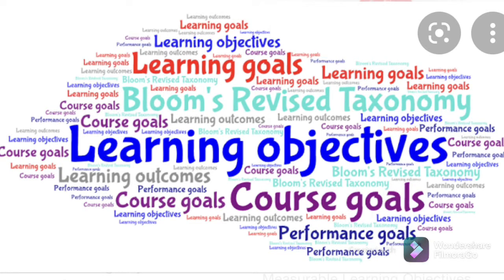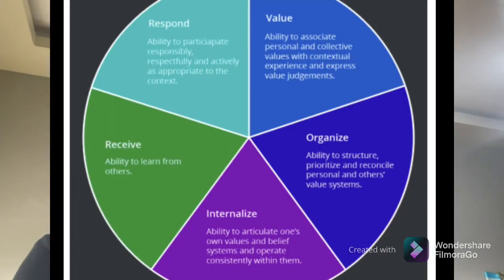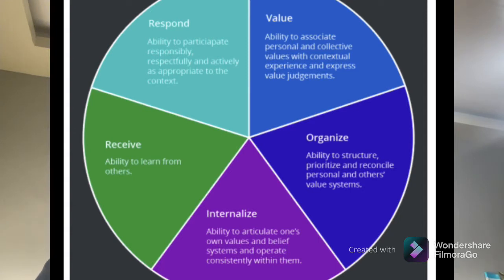On this video you can see a pie that presents Bloom's affective domain. In this circle, we will find that there are five levels under the affective domain: receive, respond, value, organize, and the highest is internalize.